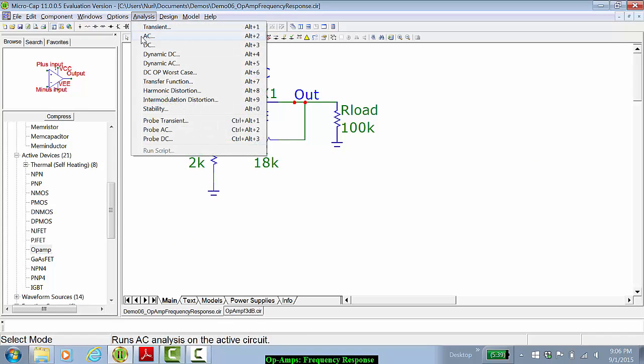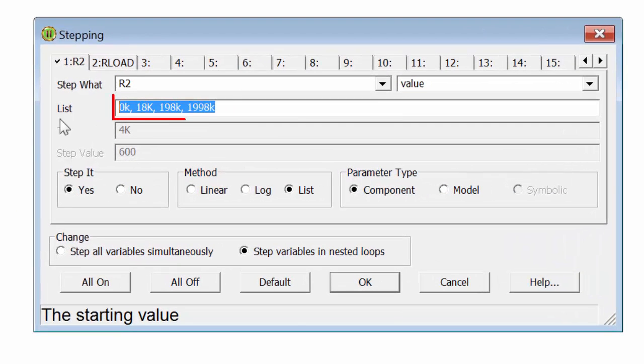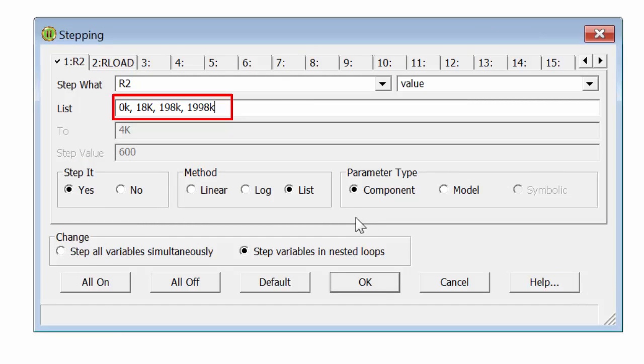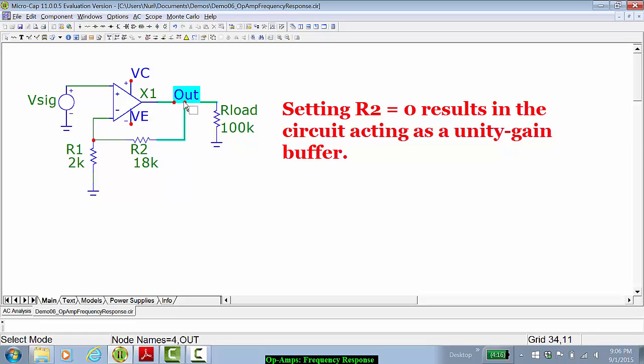When I go to analysis and AC and I look at stepping, you can see in my list that I have chosen 0k, 18k, 198k, and 1998k. Choosing R2 being equal to zero essentially means that this operational amplifier operates as a unit gain buffer. In that case, R1 becomes in parallel with our load and the overall load resistance is essentially two kilo ohms.